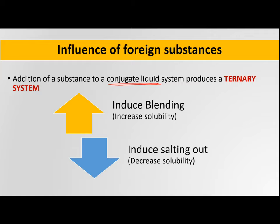When we try to add a third component — a foreign substance — to our conjugate system, it becomes a ternary system. The addition of this third component can influence the conjugate liquid system in two ways: either it induces blending, meaning it increases the solubility of both components of the partially miscible system, or it can induce salting out, meaning it decreases the solubility. This happens when the added component has more preference towards one of the components of the conjugate system.